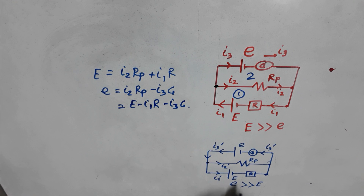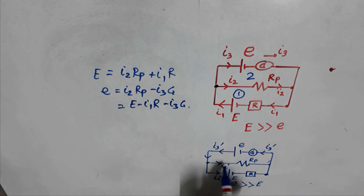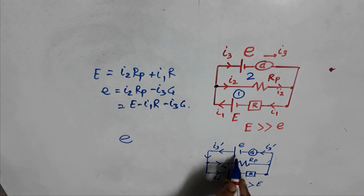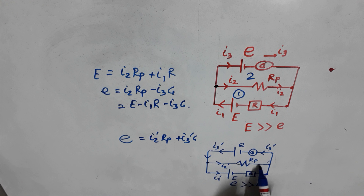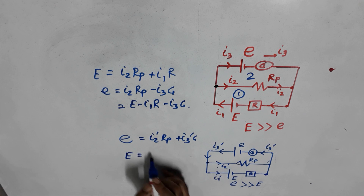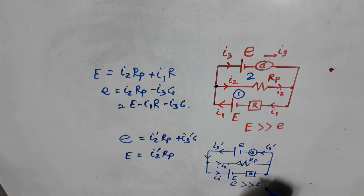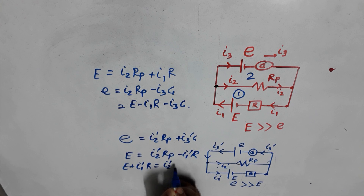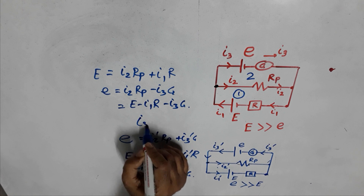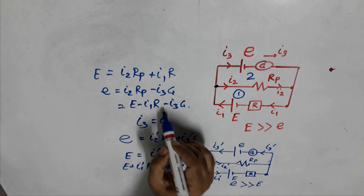In the second circuit, capital E dominates and current i3 prime flows, branching as i2 prime and i1 prime. The loop equation gives E = i2·Rp + i3'·G, and with i1 prime flowing in the opposite direction: E + i1'·R = i2'·Rp. If i3 equals zero, no current flows through the galvanometer — this is called the null point.